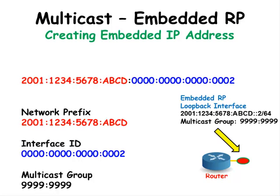This is the IP address that we're going to use for the Rendezvous Point. We're going to put it on the loopback interface address of this router. It is composed of a network prefix and an interface ID. Since we're going to use an embedded Rendezvous Point, most of the interface ID values have to be zero. We're also going to use a multicast group ID of 9999:9999.